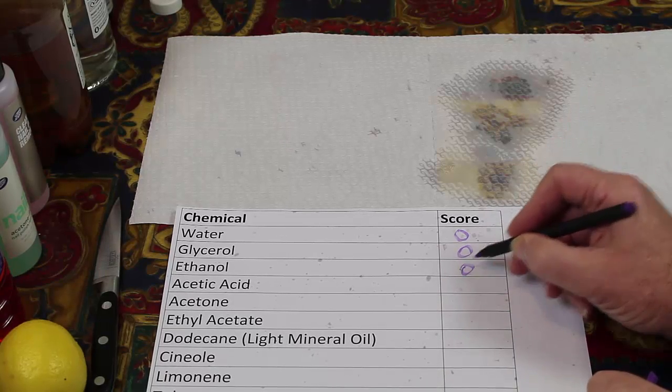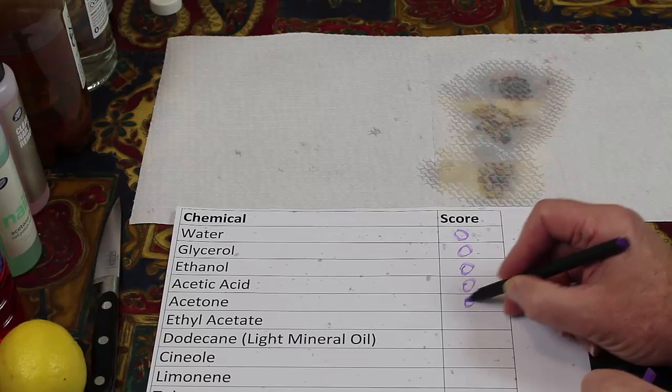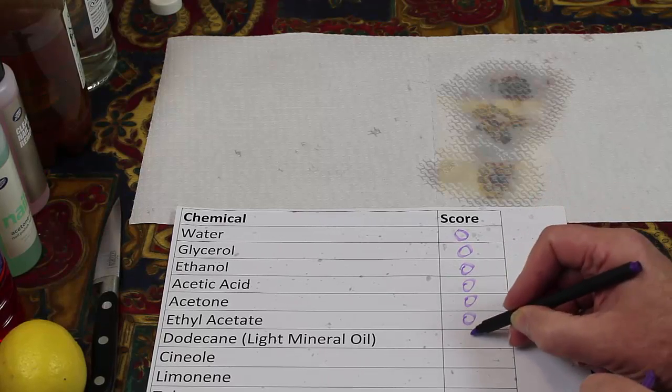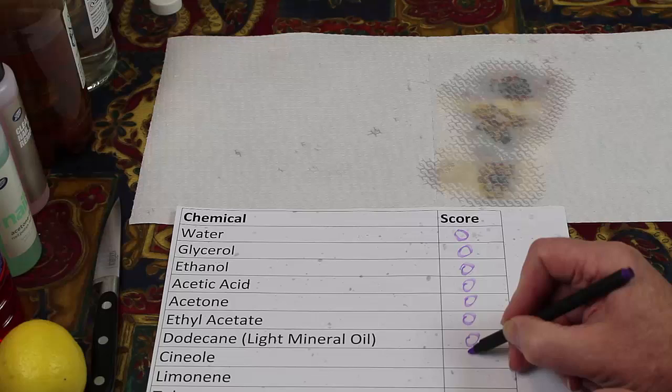So glycerol is zero. Ethanol is zero. Acetic acid is zero. Acetone is zero. Ethyl acetate is zero. Dodecane is zero. Cineol is definitely a one.